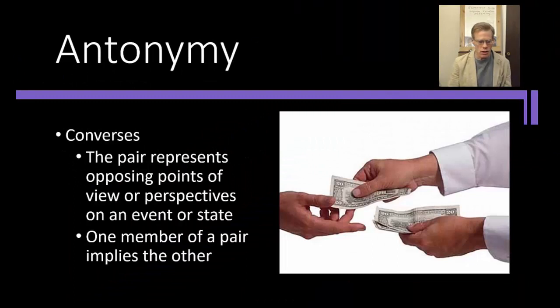And then there's converses, where the pair represents opposing points of view or perspectives on an event or state. One member of a pair implies the other. So, thinking about lending and borrowing, right? If I lend you money, then you must be borrowing money from me. So, those are going to be converses. Or if I give you money, then you receive the money.